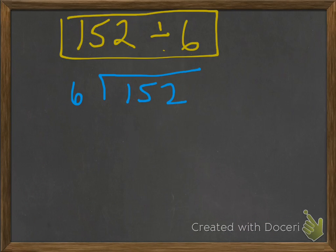So our problem is 152 divided by 6. And what we're really saying is, we're starting with 152, and we want to put them into 6 groups. So how do we do that? Let's take a look.